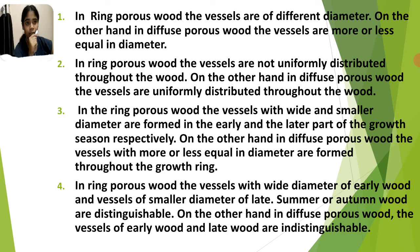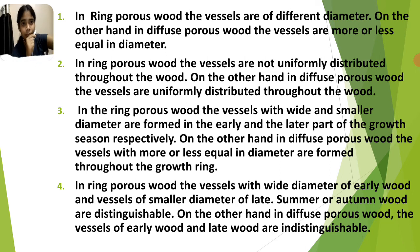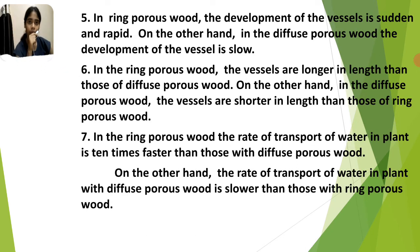Number four: in ring porous wood, the vessels with wide diameter of early wood and vessels of smaller diameter of late summer or autumn wood are distinguishable. But in diffuse porous wood, it is indistinguishable.